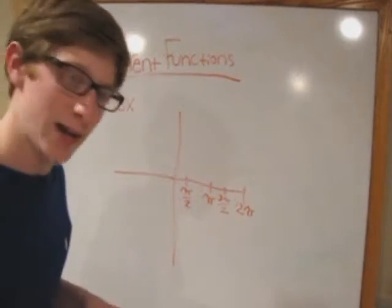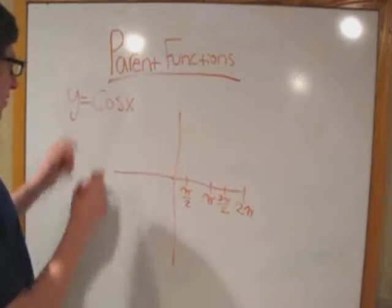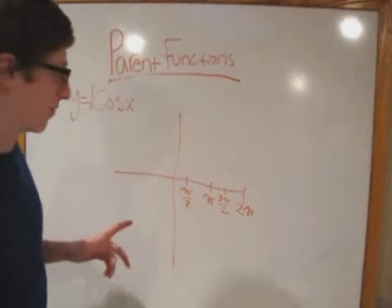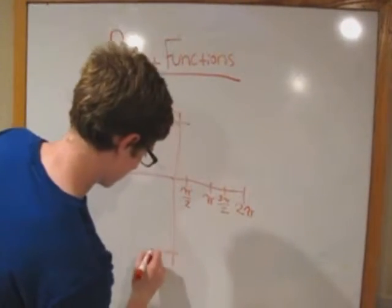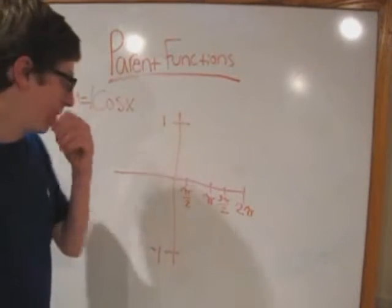Next thing we know is that amplitude, or A, is 1. Because right here, there's actually a 1. So we're going to go ahead and put our points on our y-axis.